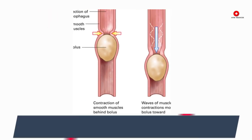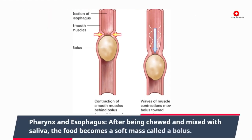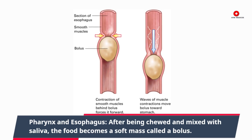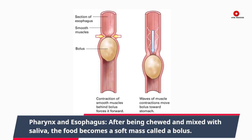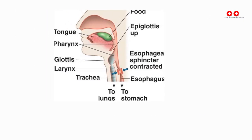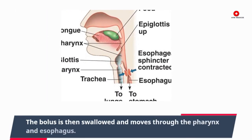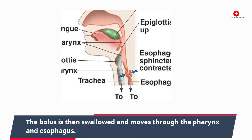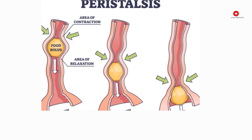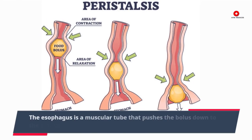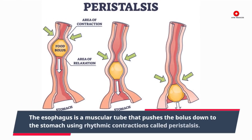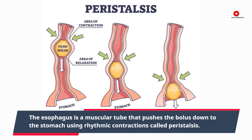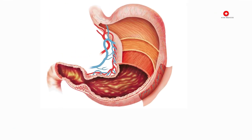Pharynx and esophagus. After being chewed and mixed with saliva, the food becomes a soft mass called a bolus. The bolus is then swallowed and moves through the pharynx and esophagus. The esophagus is a muscular tube that pushes the bolus down to the stomach using rhythmic contractions called peristalsis.